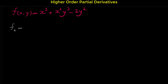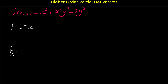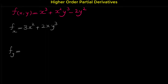Let's start with the first partial derivative f sub x, which means we want to find the derivative of this function with respect to x. The derivative with respect to x is 3x squared plus the derivative of x squared y cubed with respect to x, which is 2xy cubed. Note that when we take the derivative with respect to x, y cubed is a constant coefficient for x squared, and the derivative of x squared is 2x.